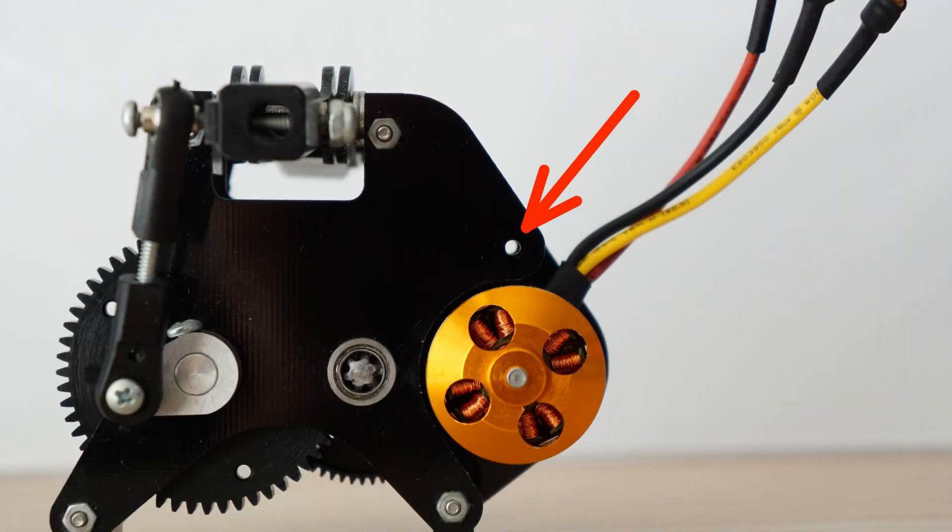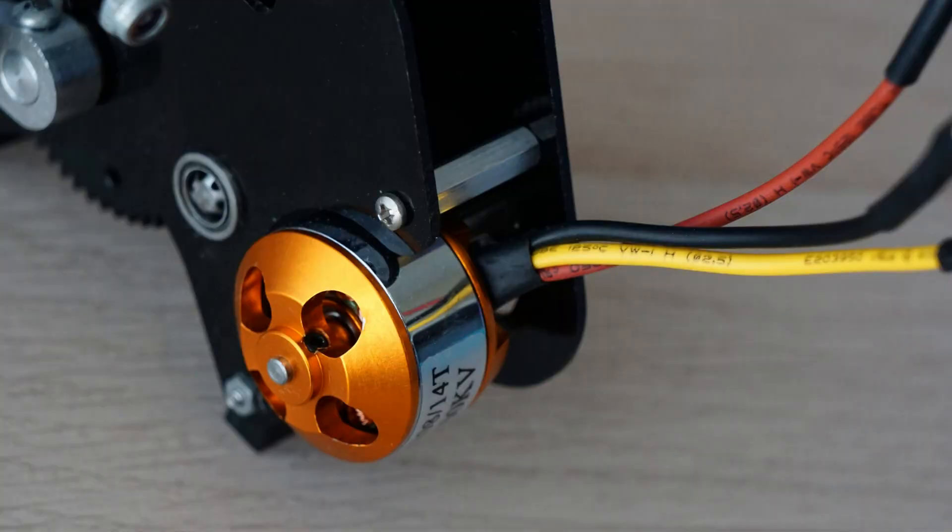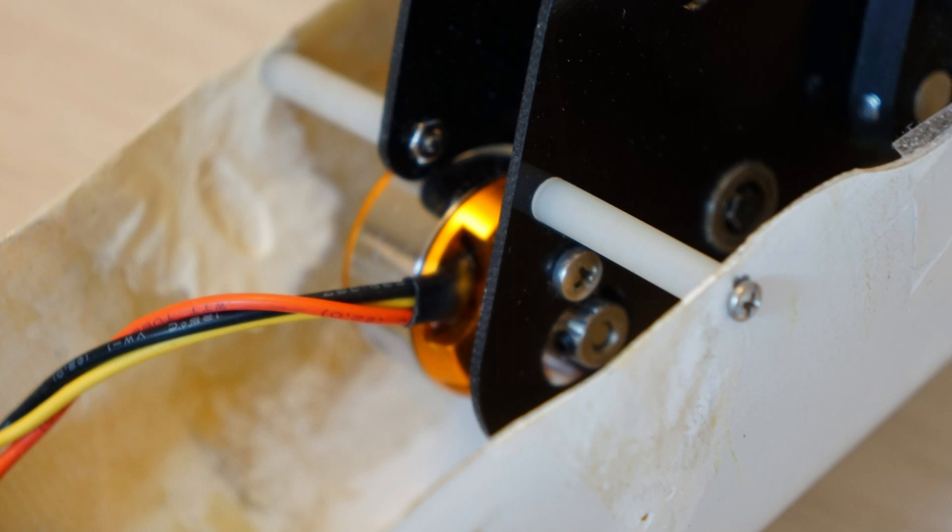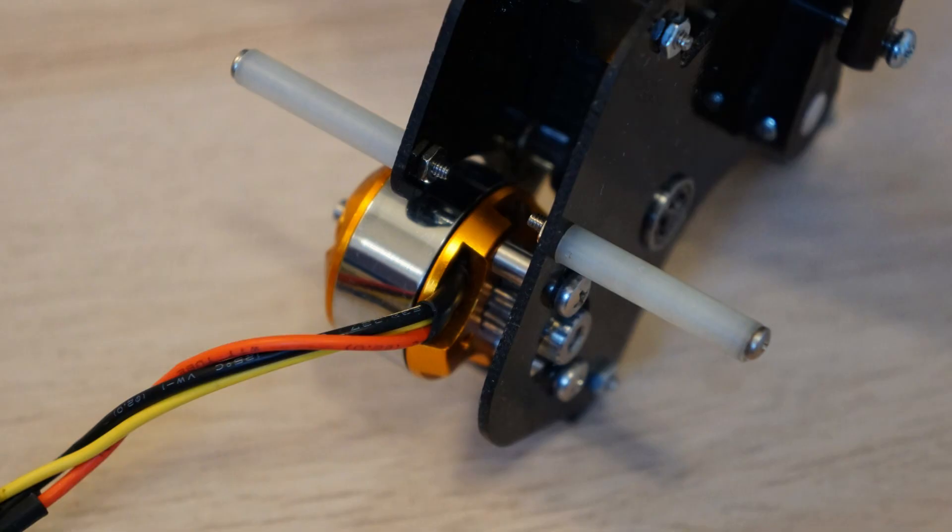You may have noticed these extra holes on the gearbox. There was going to be an extra spacer there, but it wasn't necessary, so it's not included in the kit. But you can use this as an extra mounting point for the gearbox. It keeps it from rocking side to side.